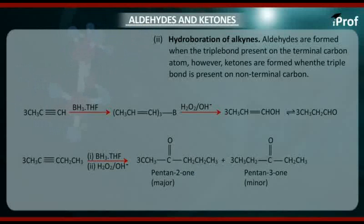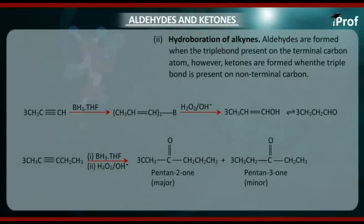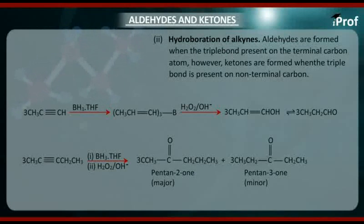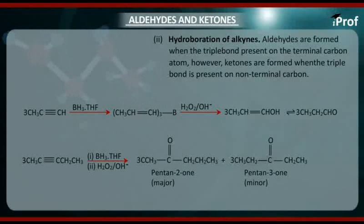Remember that vinyl boranes formed from terminal alkynes used for preparing aldehydes still have one hydrogen atom that can further react with fresh molecules of diborane, leading to low yield of aldehyde. Therefore, it is advisable to use sterically hindered alkyl borane instead of diborane, especially during preparation of aldehydes. One such sterically hindered alkyl borane is disiamylborane.